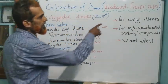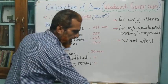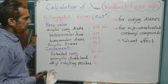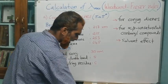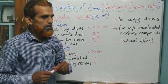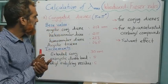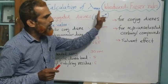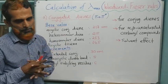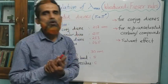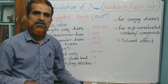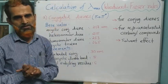Now let us move to the next class of compounds — alpha-beta unsaturated carbonyl compounds. We will discuss the base values and increment rules for calculating lambda max of enones in the next class. In summary: for conjugated dienes, knowing the base value and increment values, we simply add them to get lambda max. Practice the given questions.